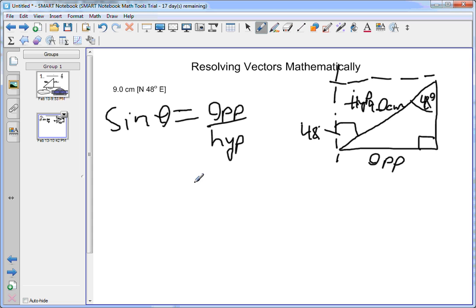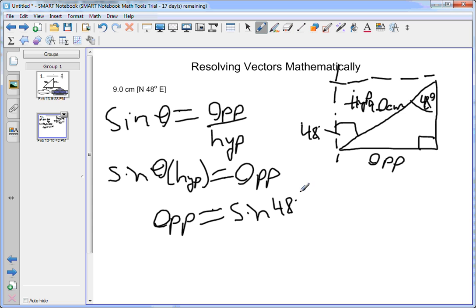We can solve for opposite by multiplying both sides by the hypotenuse, and we get sine theta times the hypotenuse equals the opposite. From that, we can say opposite equals sine 48 degrees times 9.0 centimeters.